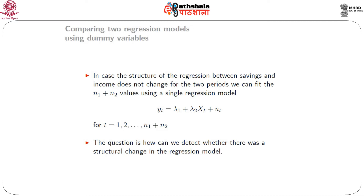If indeed there are no changes, then all the n₁ and n₂ data values could be pooled and we can fit one single linear regression model to the entire dataset of n₁ + n₂ observations, denoted by: Y_t = λ₁ + λ₂X_t + u_t. The question we wish to answer is: how do we detect structural change, or how do we compare these two regression lines and conclude whether they are the same or significantly different?